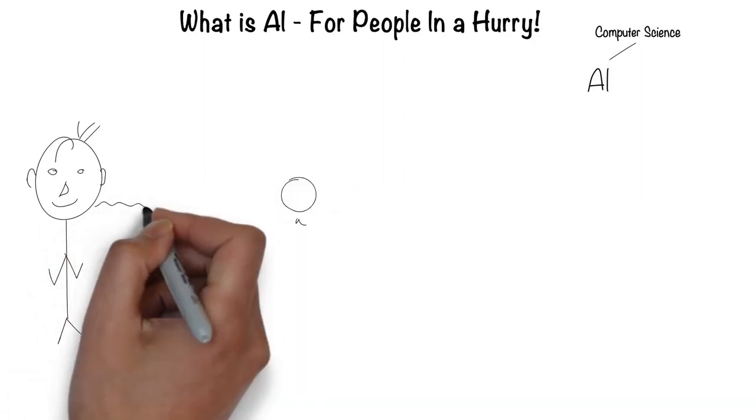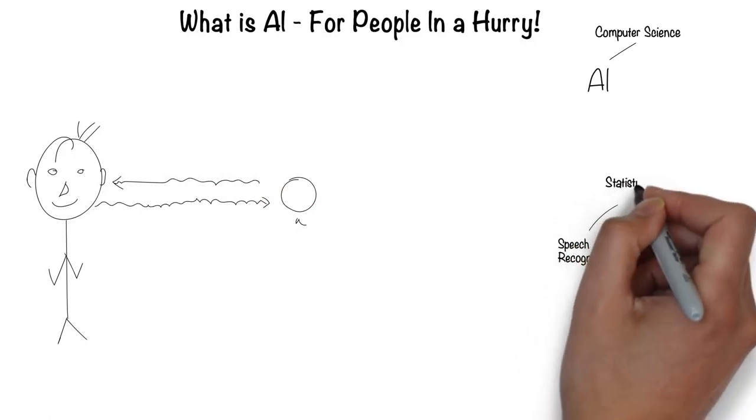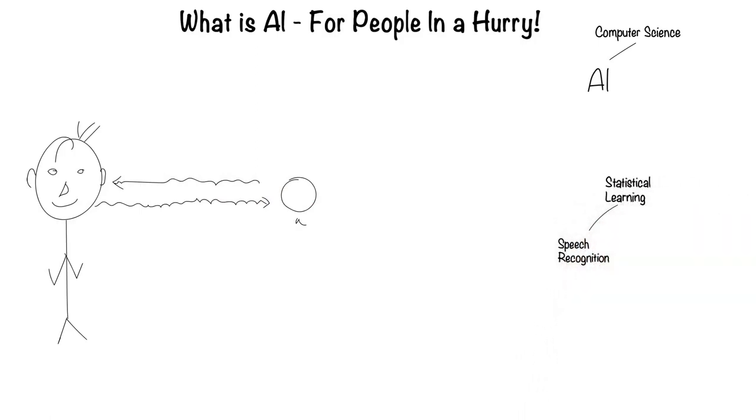Humans can speak and listen to communicate through language. This is the field of speech recognition. Much of speech recognition is statistically based. Hence, it's called statistical learning.